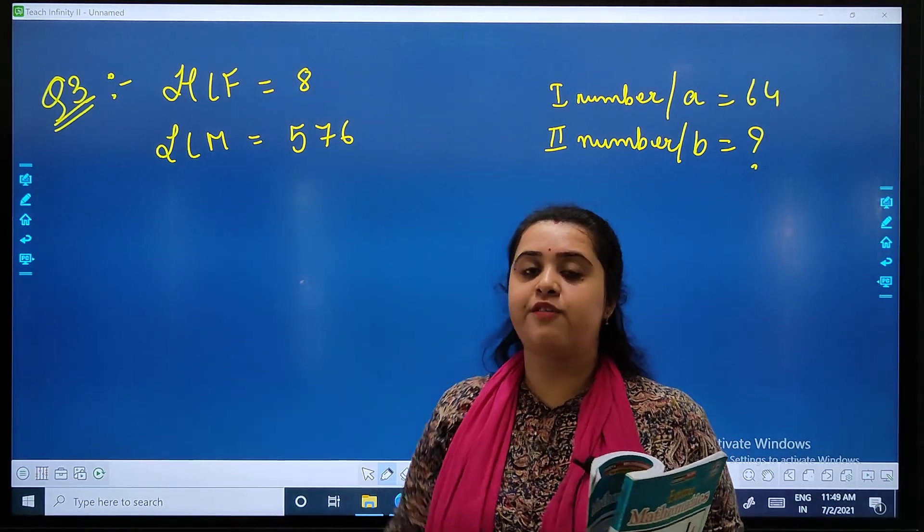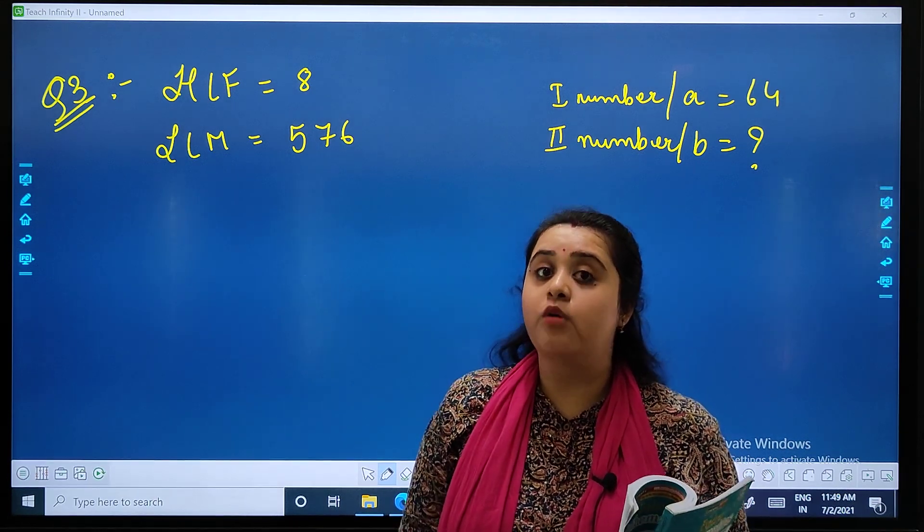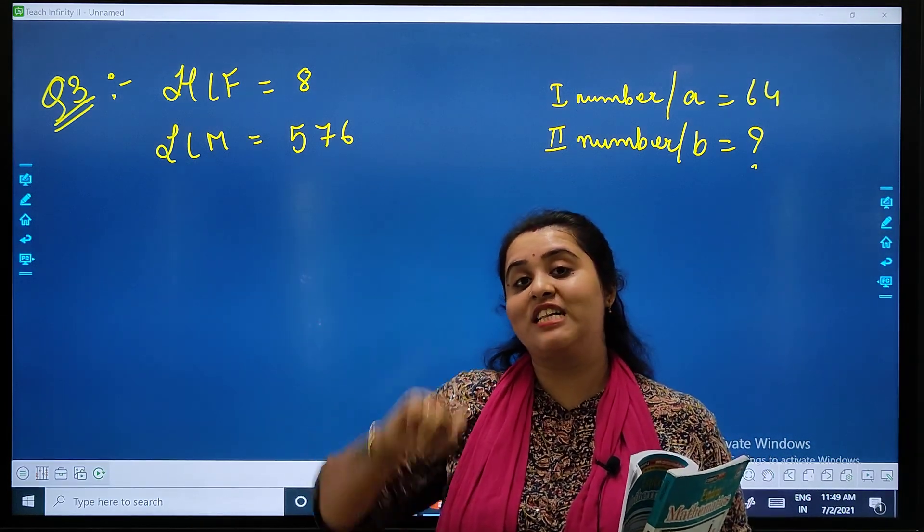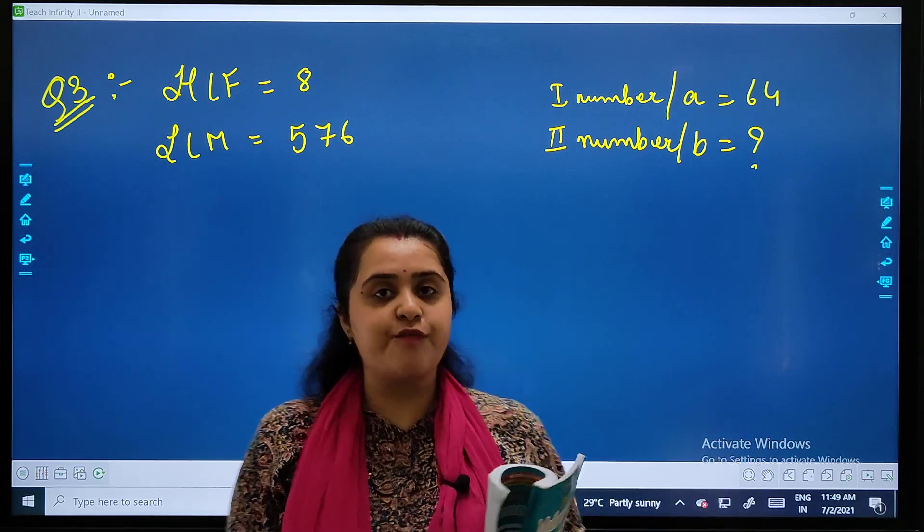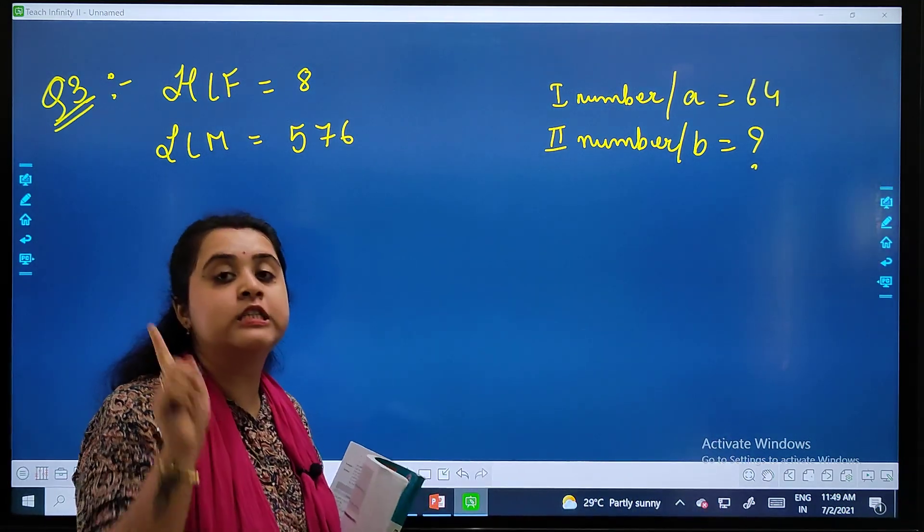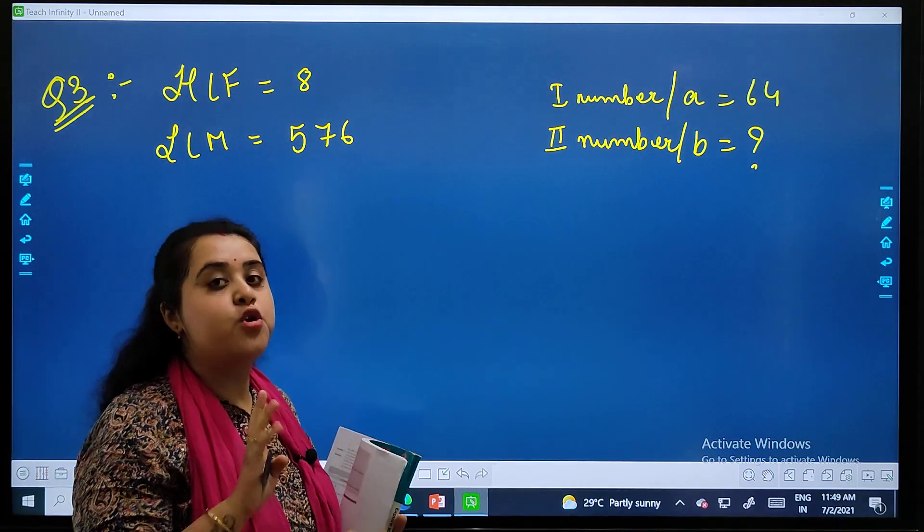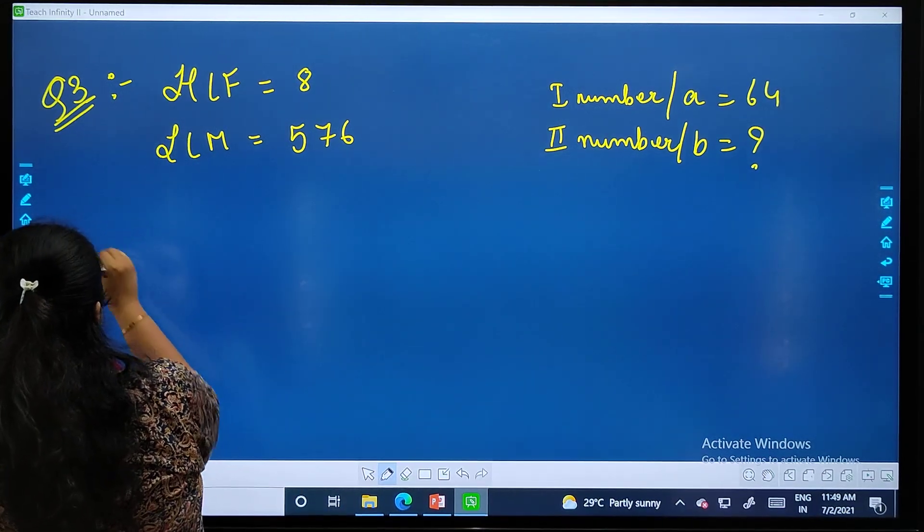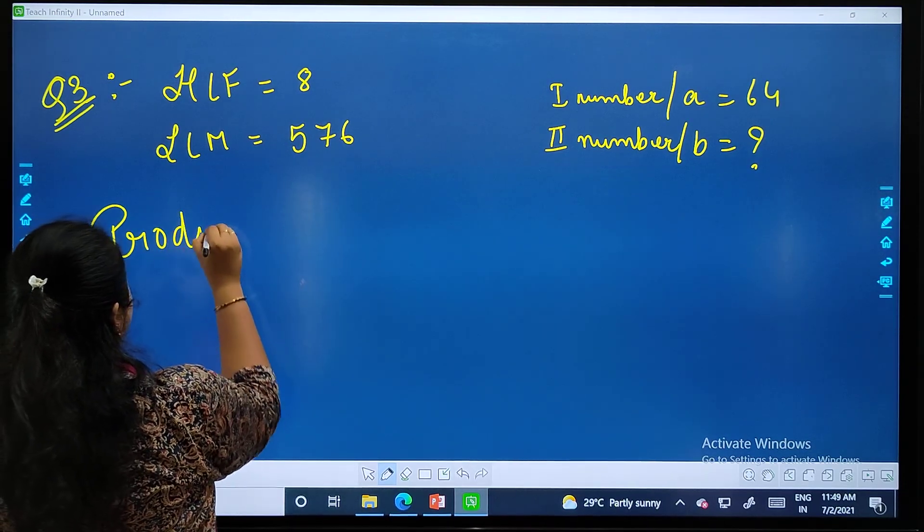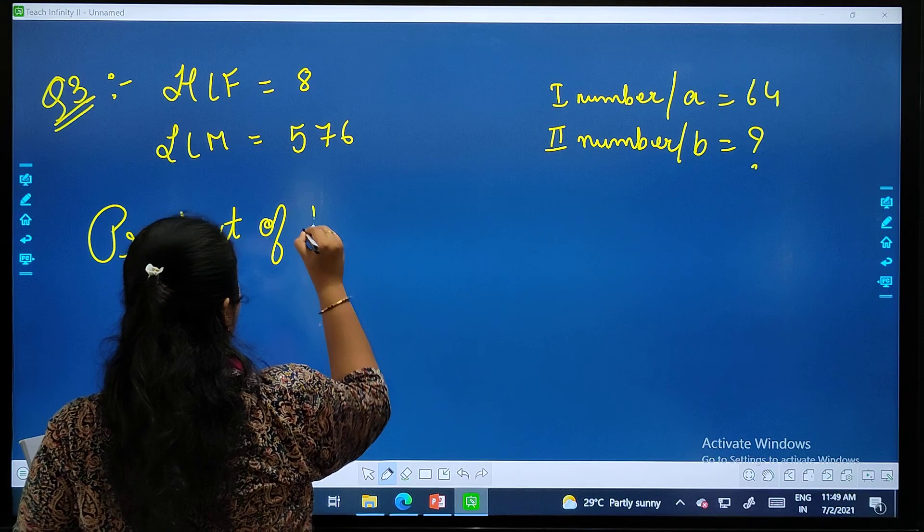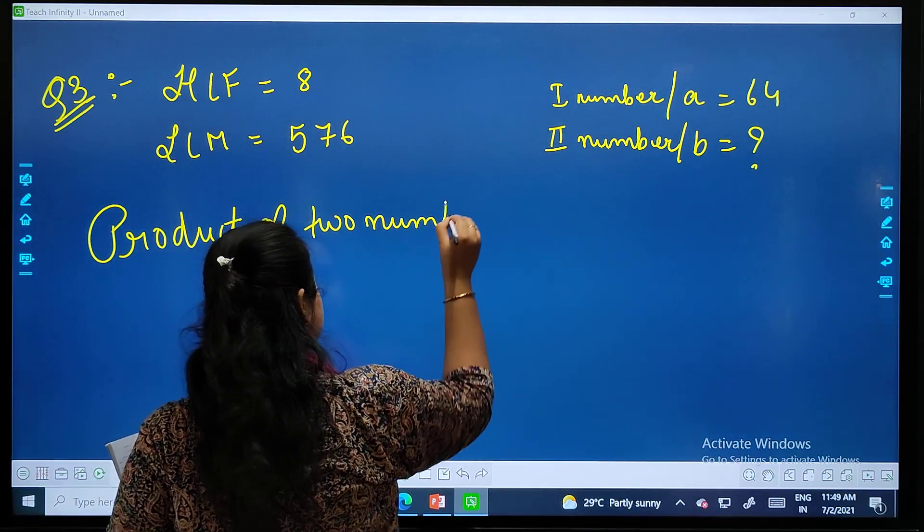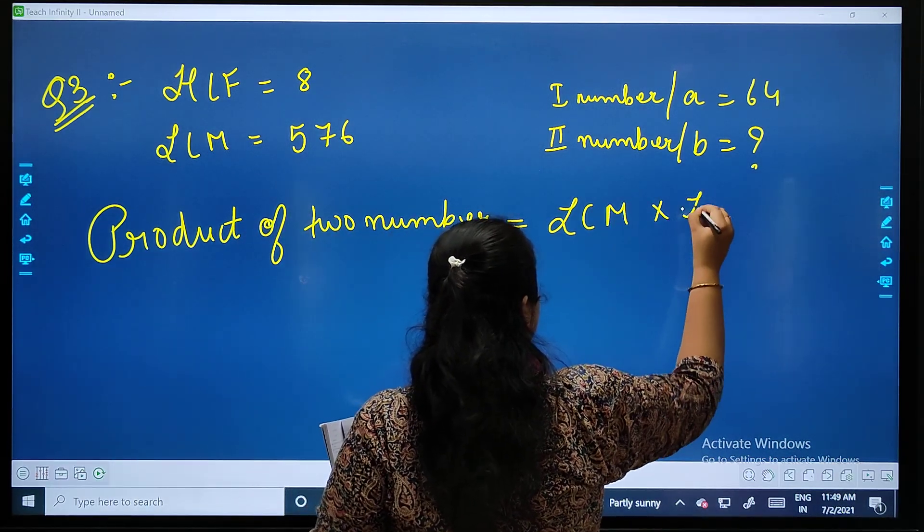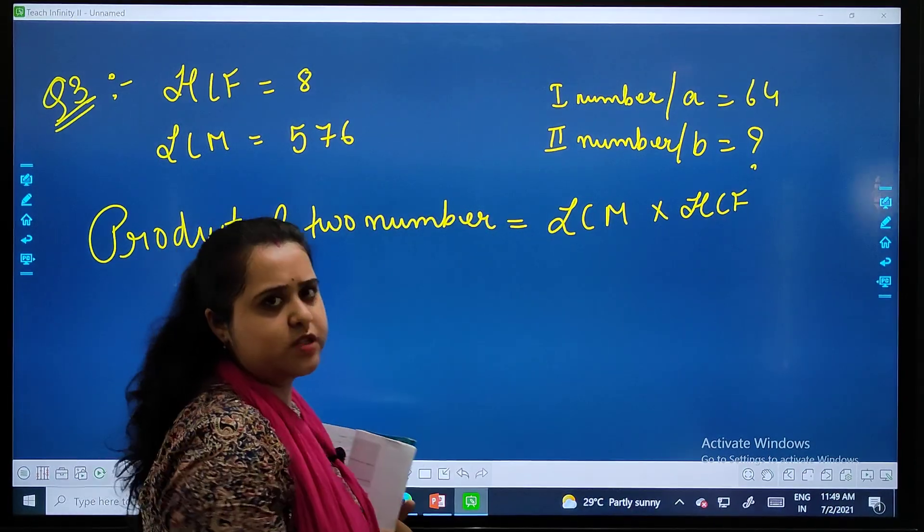If you remember in the previous part, we have seen formulas to find out the missing number. I have told you, you need to remember the relationship of HCF and LCM. Exactly. What was that formula? Product of two numbers equals to LCM into HCF.